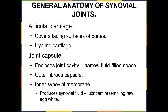When people say 'I'm bone on bone,' basically they've eaten away their articular cartilage and there's no way that's coming back. The joint capsule includes the joint cavity, which is a narrow fluid-filled space, with a tough outer fibrous capsule. The inner synovial membrane produces synovial fluid, which is like a lubricant — like WD-40, resembling raw egg whites. As you get older, your synovial fluid starts to dry out.